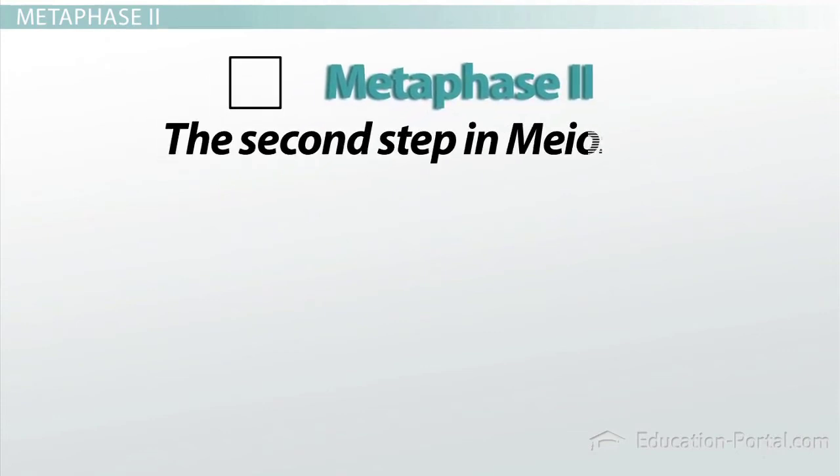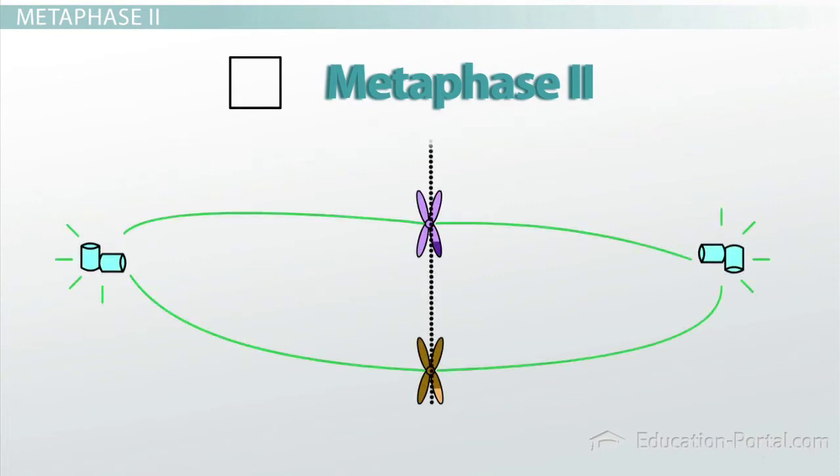Metaphase II is the second step in meiosis II. At metaphase II, each chromosome is aligned at the metaphase plate. As in mitosis, each chromosome is held in place at the metaphase plate by equivalent spindle tension on each side.